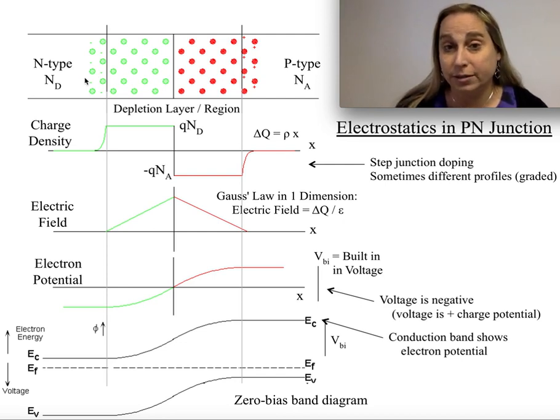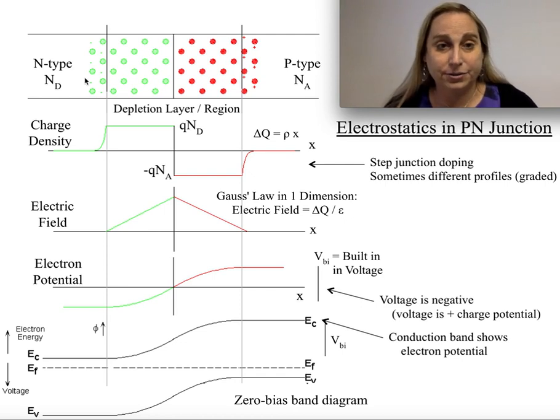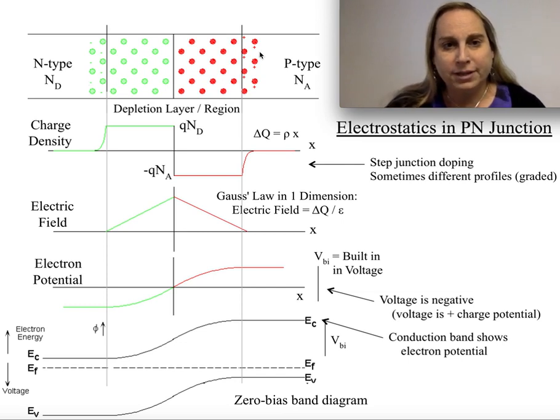Remember, sitting around those elements are lots of positive ions, and those positive ions and the negative charge basically makes everything electrically neutral. Same sort of thing is true on the P-type material, except that now I've got holes floating around negative ions.